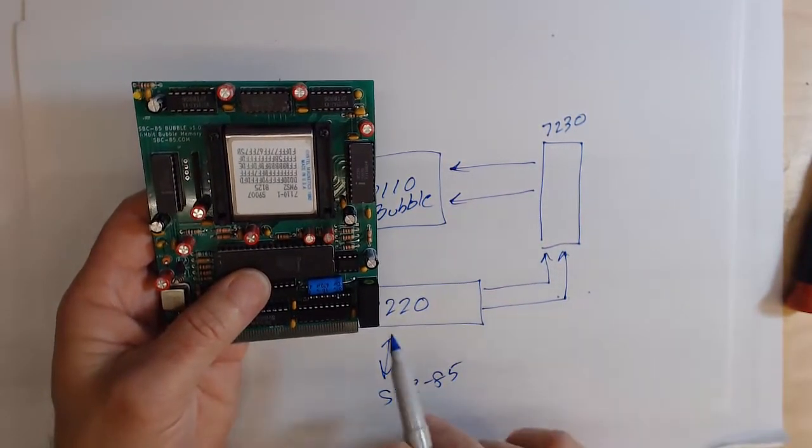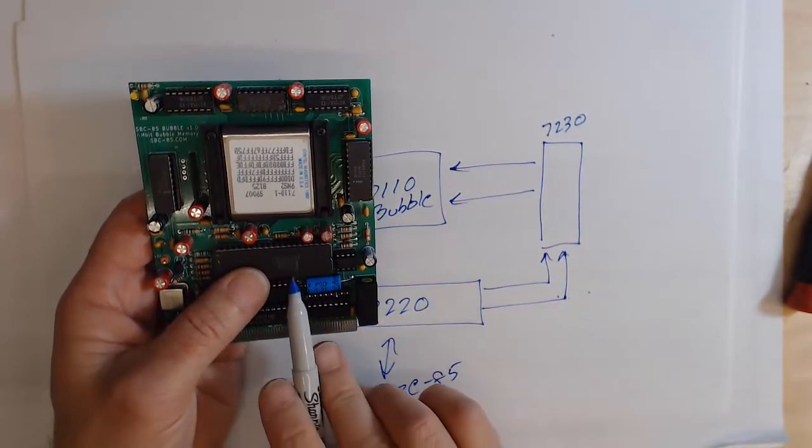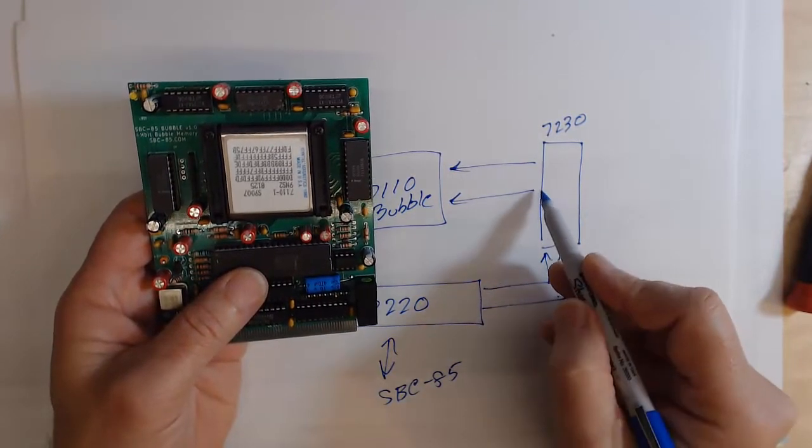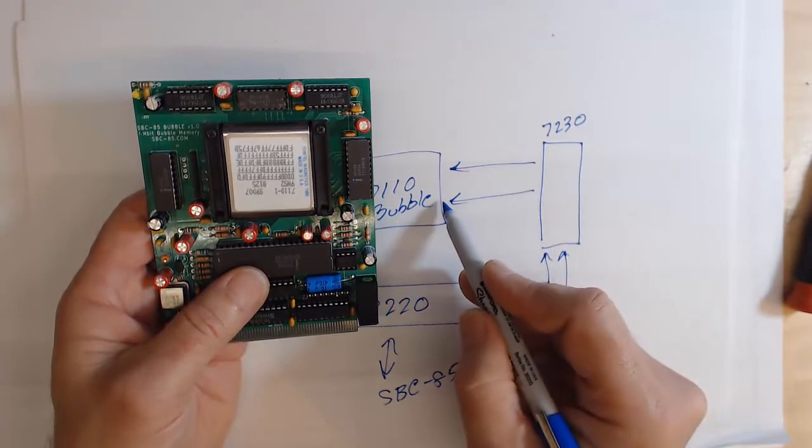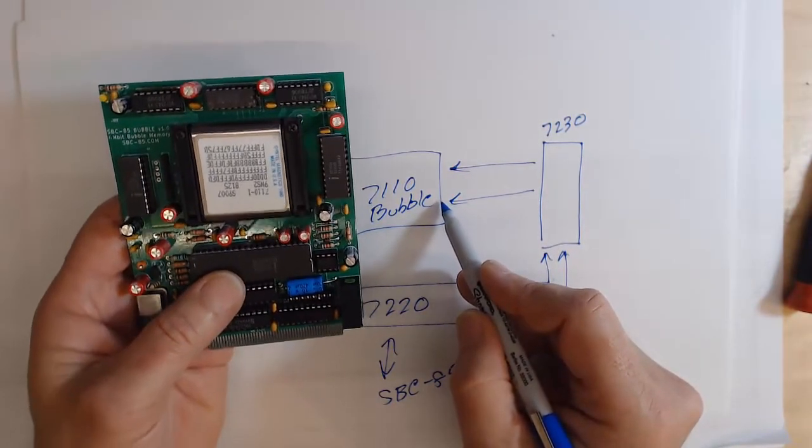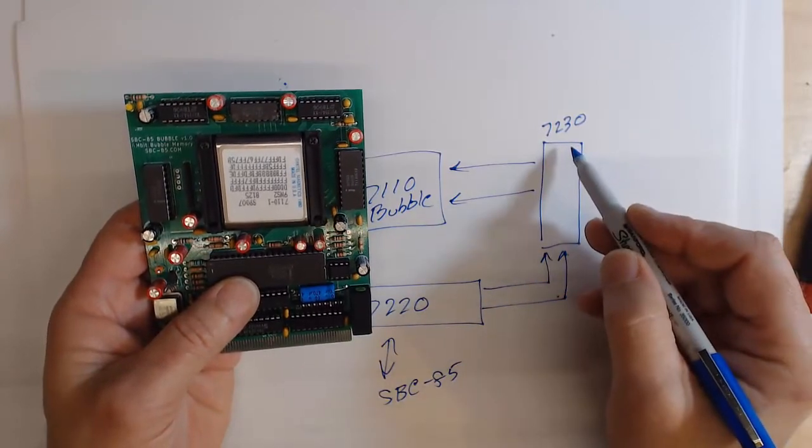So if I say that I want to do a swap, the 7220 controls that, it comes out the swap line, it triggers this, and then the 7230 triggers that swap mechanism inside the bubble. That's what this pulse generator does.